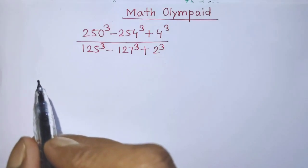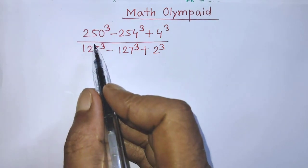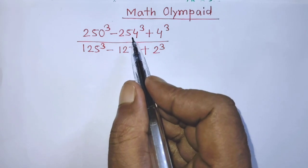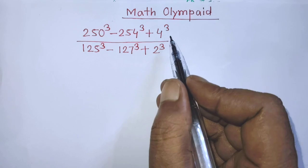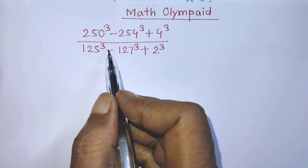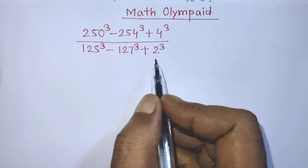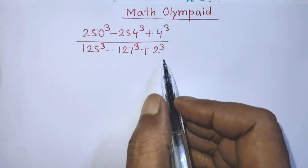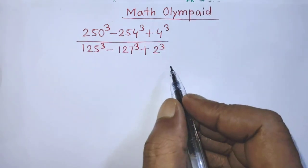Hello guys, you are welcome. We are going to solve this math problem: 250 whole to the power 3, minus 254 whole to the power 3, plus 4 to the power 3, over 125 whole to the power 3, minus 127 whole to the power 3, plus 2 to the power 3. Today I am telling you how to simplify this algebraic expression.